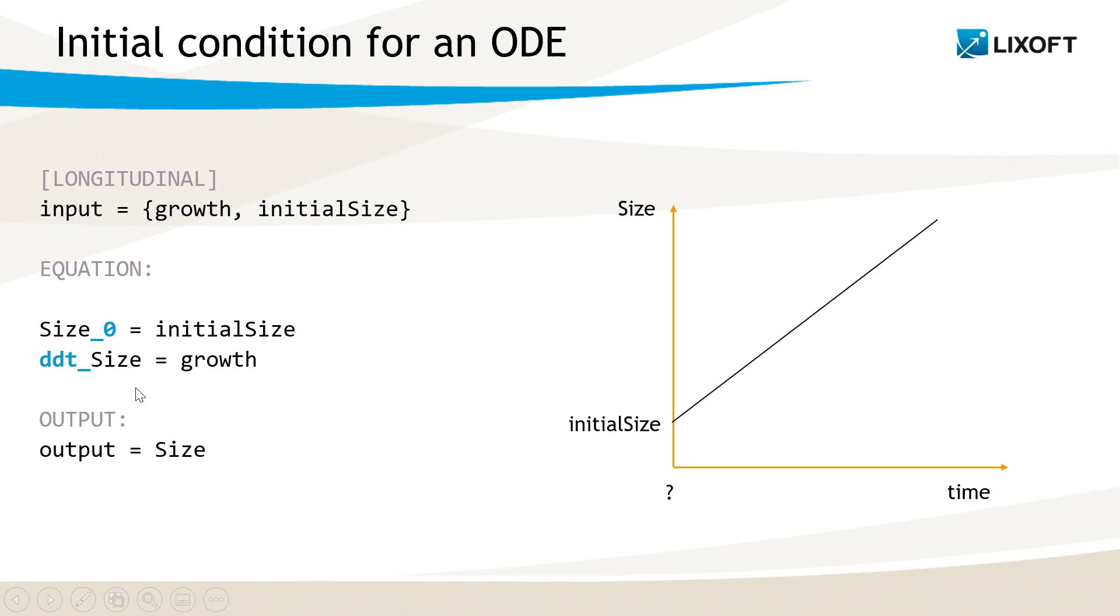For example, this variable size that follows a linear growth could be a tumor size and the initial condition is initial size. This zero refers to the index of the prediction time, but it does not mean that the time corresponding to this initial condition is necessarily zero. In this video I will show the different possibilities for the initial integration time and their impact on the model.